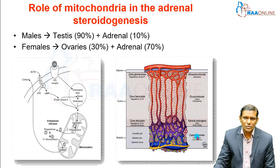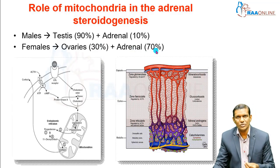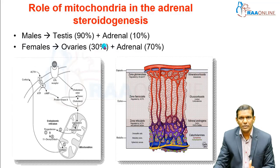The adrenal medulla releases catecholamines — epinephrine and norepinephrine. In females, the ovaries constitute 30% of hormone synthesis and the adrenal gland constitutes 70%. So the female testosterone level of 0.3 to 1.3 micrograms per liter is split as: ovaries 30% and adrenal gland 70%.